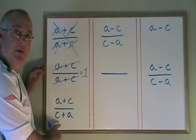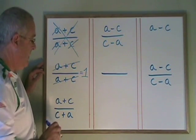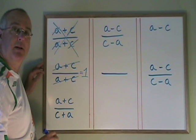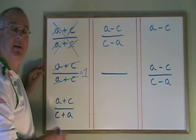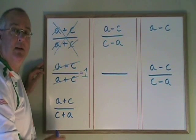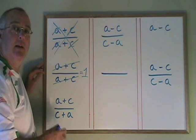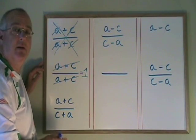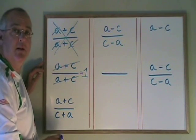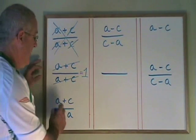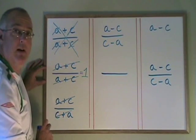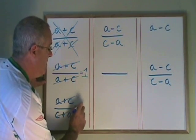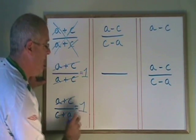When we see this example here, we have a plus c on the top and c plus a on the bottom. We can still cancel these because a plus c is equal to c plus a, in the same way that three plus four is equal to four plus three. So we can cancel top and bottom, and again our answer is one.